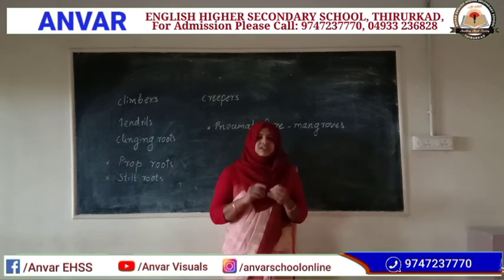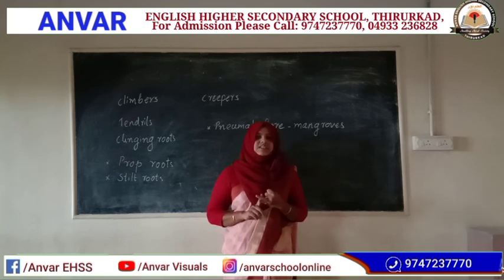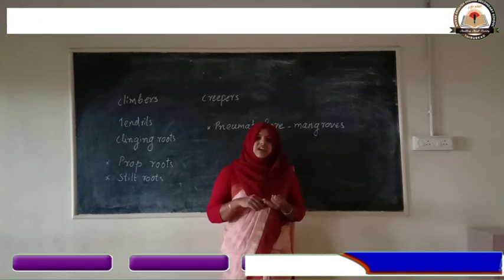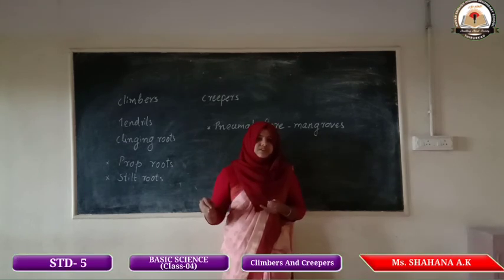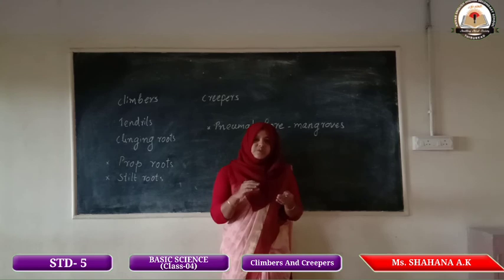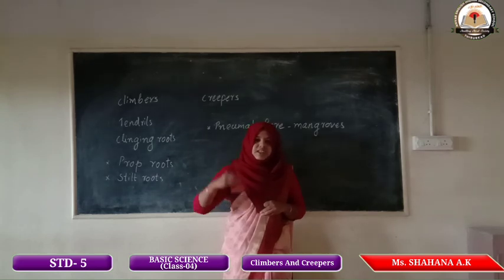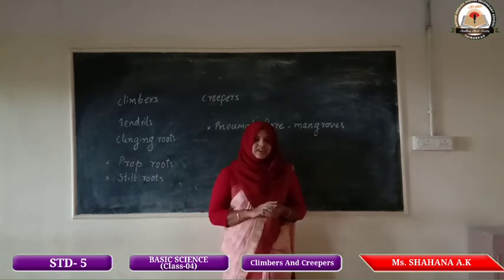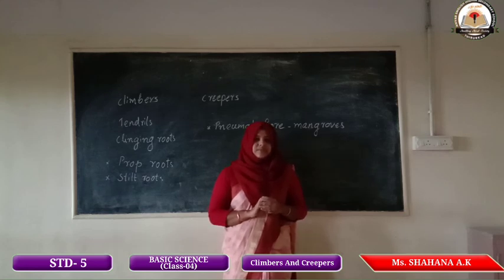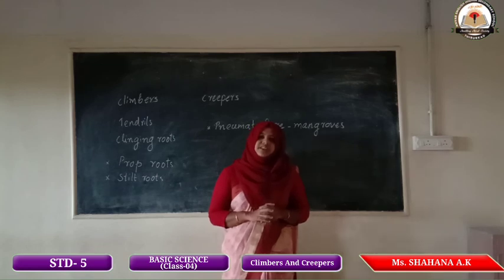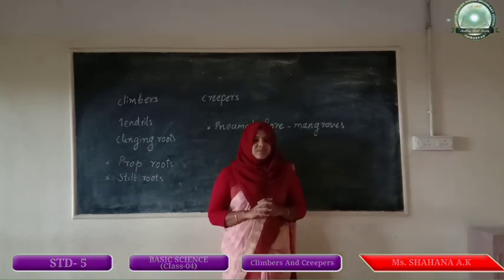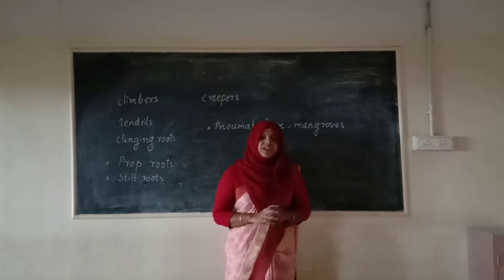Then we studied about storage root and underground stem. Storage roots are roots in which the plant stores food — example is tapioca. Underground stems are tubers that store food in stems found below the soil — example is potato. I think you have understood all the things we have discussed in today's class. Don't forget about the activities I have given. Thank you.